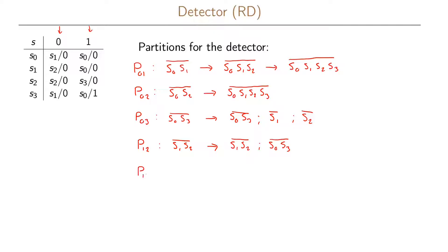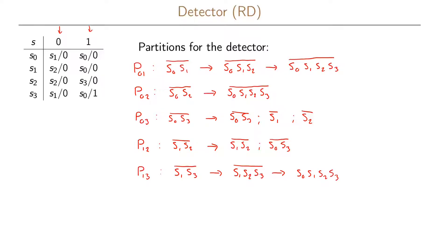Looking at pair p13, we start by partitioning s1 and s3. From the state transition table, s1 and s2 should be in the same partition and s0 and s0 in the same partition, giving us {s1, s2, s3} with s0 by itself. But looking further, for inputs one and two and three we also need s0 and s3 in the same partition, meaning we must add s0 to the partition — so we again end up with all states in one partition.